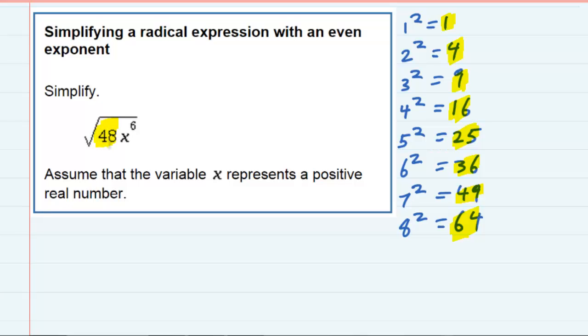And the 48 is a whole number, so we've got one set of rules for how to simplify that whole number underneath the radical. But the x to the sixth is a variable raised to a power, so we've got a different rule for how to simplify that.